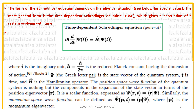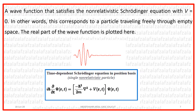The scalar wave function ψ(r) is such that the integral of ψ* ψ d³r represents the probability — a physical quantity. A wave function that satisfies the non-relativistic Schrödinger equation with V equal to zero corresponds to a particle traveling freely through empty space, and it looks like a traveling wave. In the position basis, the Hamiltonian Ĥ can be expanded as −ħ²/2m ∇² plus V, where the first term is the kinetic energy operator and the second term is the potential energy operator.